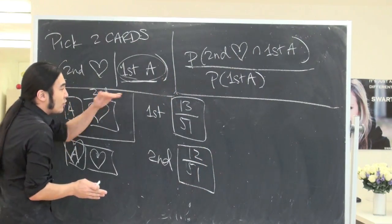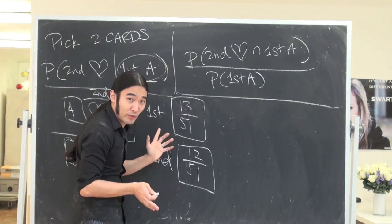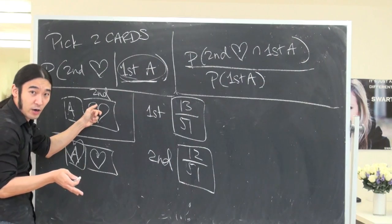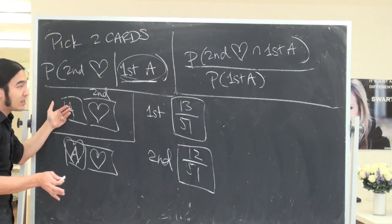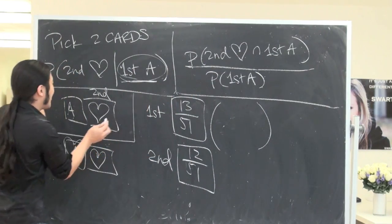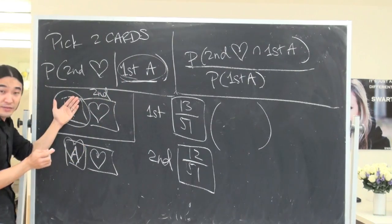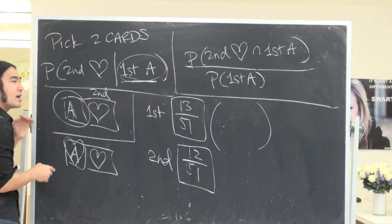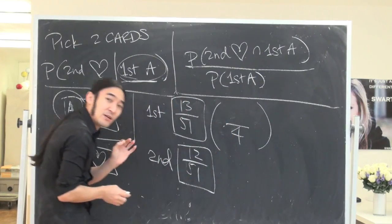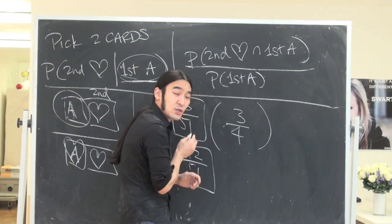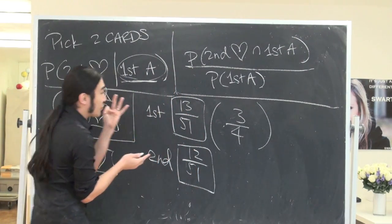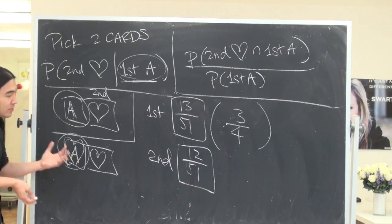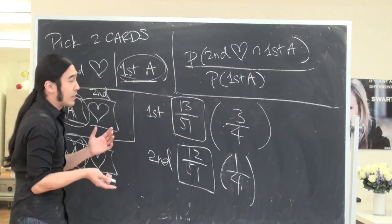But we're not done. We broke it up into two cases, and if the cases had a 50-50 shot, that would be one thing, but not equally likely. So we have to take care of that. This is the probability that you would get a heart on the second card, given that the first card was an ace but not a heart. But in order to even get to that situation, you have to be lucky enough for this ace not to be a heart.